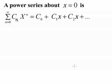A power series about x equals 0 is of the form: the sum from n equals 0 to infinity of c sub n times x to the n. So it would be c0 plus c1x plus c2x squared plus c3x cubed, and you just keep going with n increasing up to infinity.